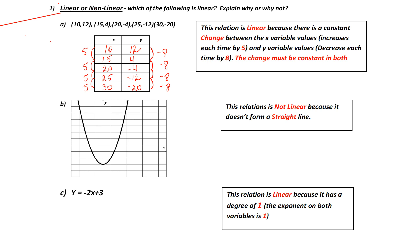Part B: When given a graph, this is usually the most obvious. A linear relation forms a straight line. Since this line is not straight, it is not linear. Part C: When given an equation, I look at the degree — the exponents on the variables. If the exponent on each variable is 1, then it is linear. If the exponent is anything but 1, it is not linear. Since the exponent on both y and x is 1, this represents a linear relation.